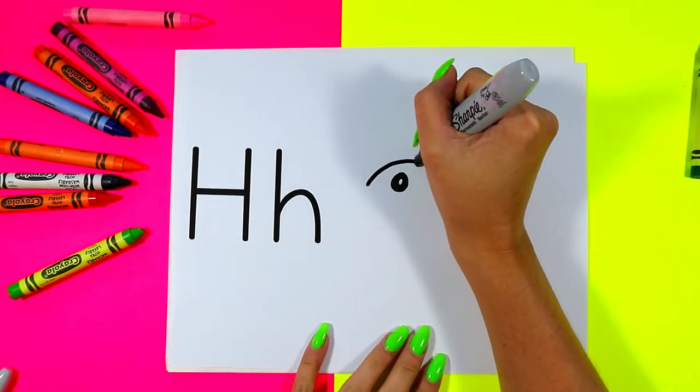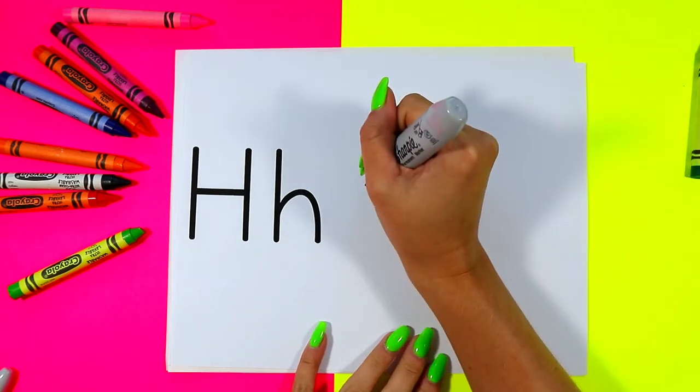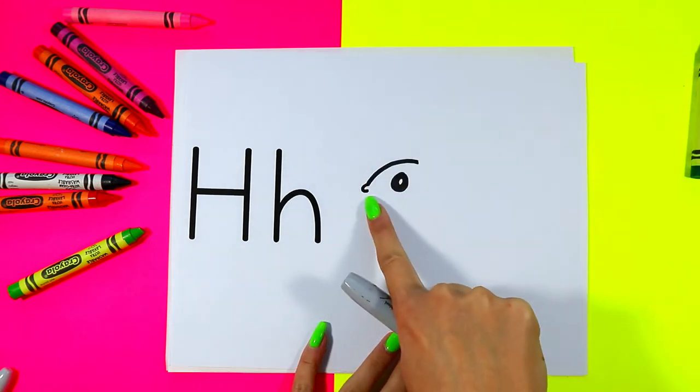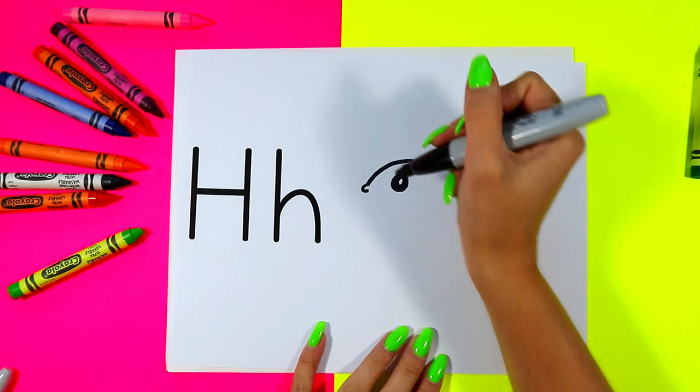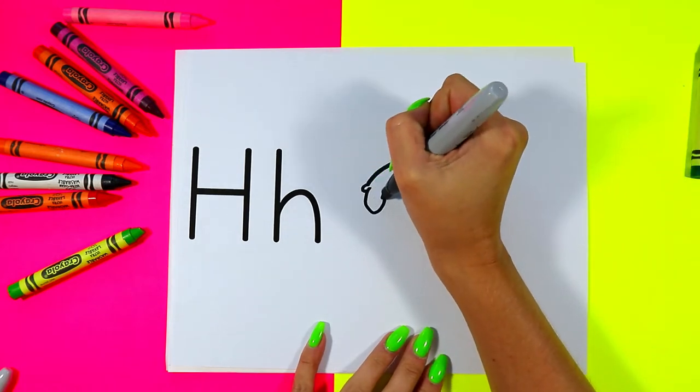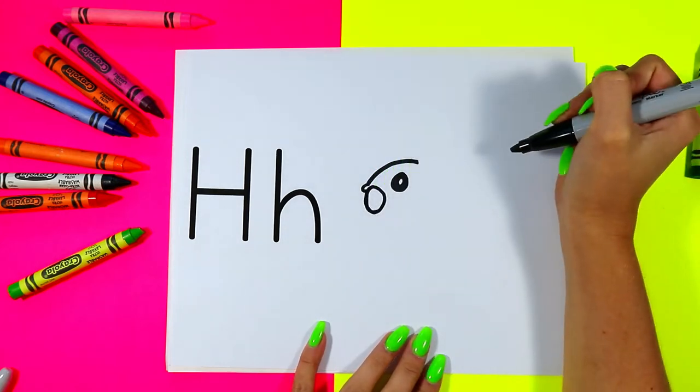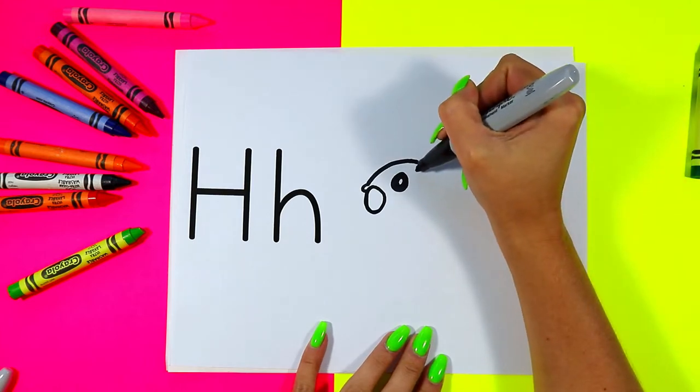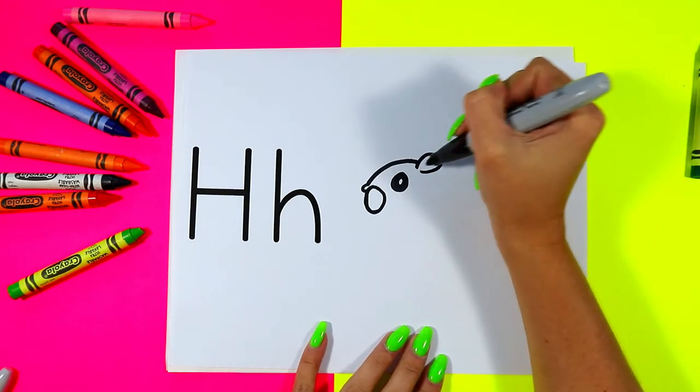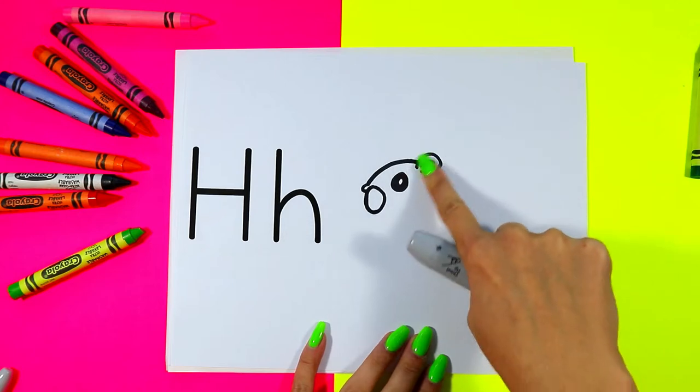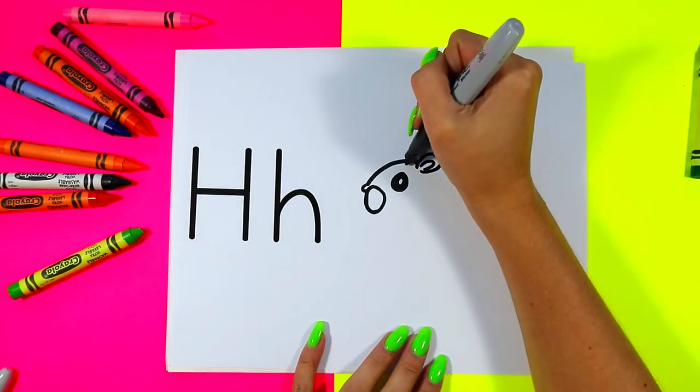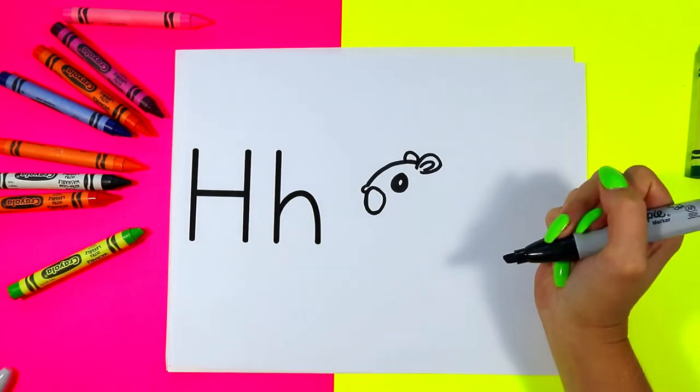Draw a curved line up. Add a little curve at the front for a little hamster nose and a circle for a little hamster cheek. Next we're going to add a little hamster ear with a curved line and one behind for the other ear.